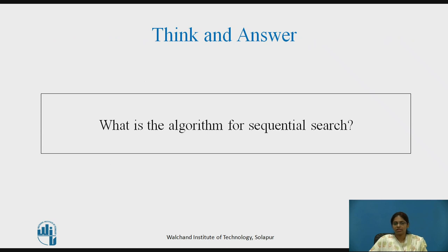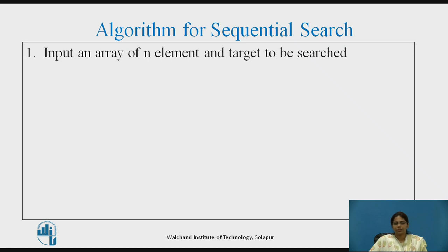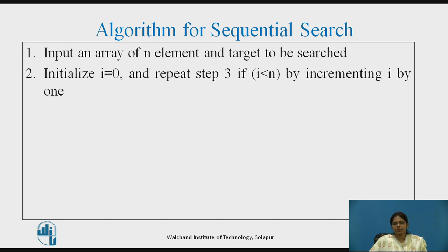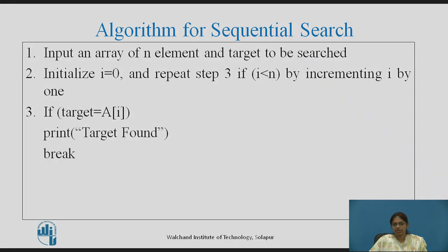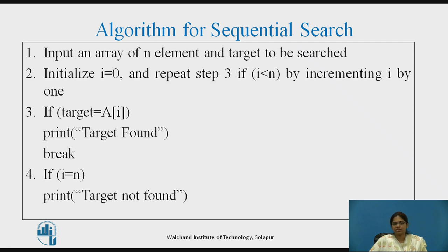Algorithm for sequential search: First, input an array of n elements and the target to be searched. Then initialize pointer i to 0 and repeat step 3 while i is less than n, incrementing i by 1 each iteration. In each iteration, check if target equals A[i]. If so, print that the target is found and use a break statement to exit the loop. After the loop, if i equals n, print that the target was not found.